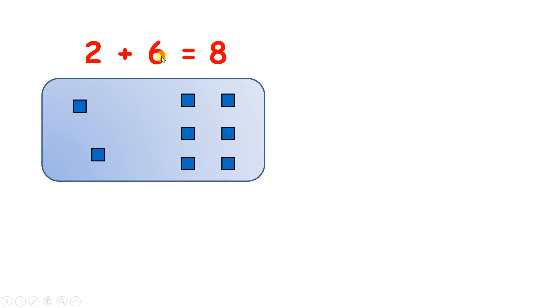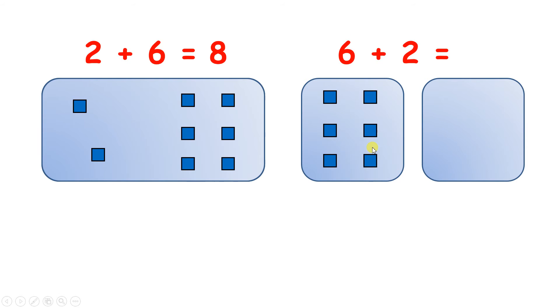So we've done two add six. Now let's look at six add two or six plus two. So in my box on the left I can draw one, two, three, four, five, six blocks. Now in my box on the right I can place one, two blocks.